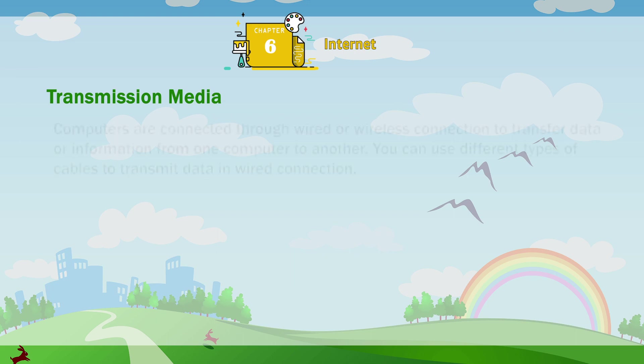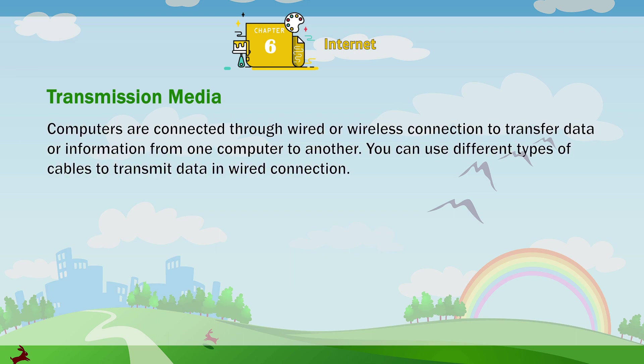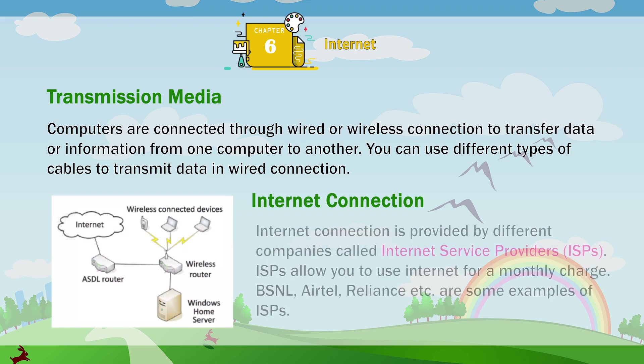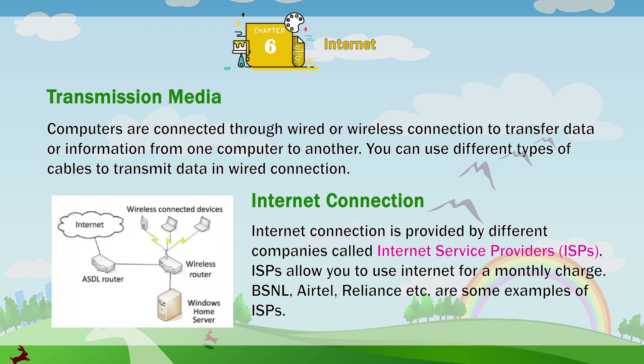Transmission media: computers are connected through wired or wireless connection to transfer data or information from one computer to another. You can use different types of cables to transmit data in a wired connection. Internet connection is provided by different companies called Internet Service Providers, ISPs. ISPs allow you to use internet for a monthly charge. BSNL, Airtel, Reliance, etc. are some examples of ISPs.